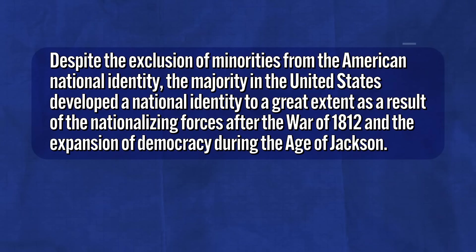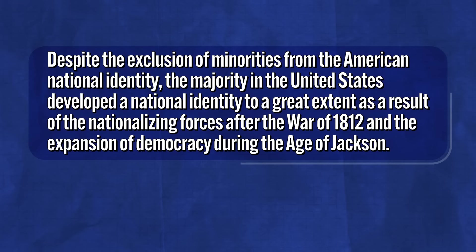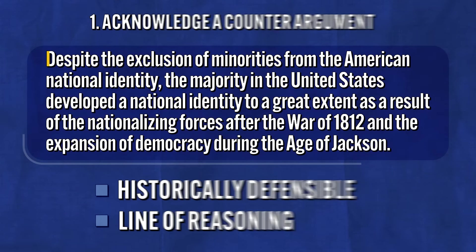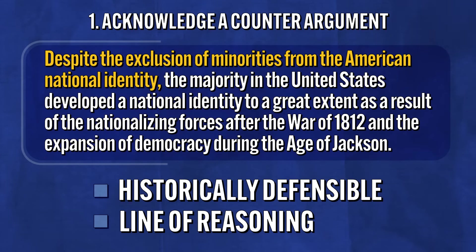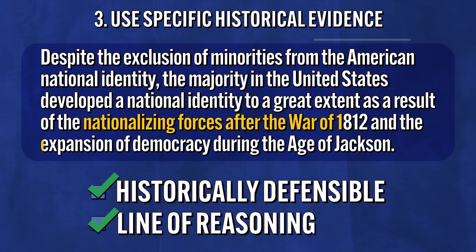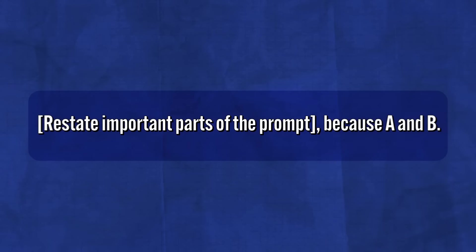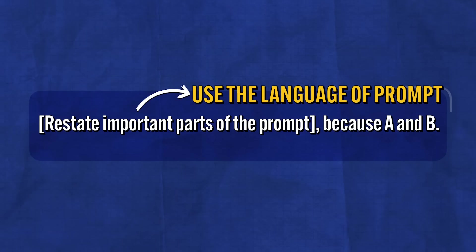Watch what happens when we establish a line of reasoning: 'Despite the exclusion of minorities from the American national identity, the majority in the United States did develop a national identity to a great extent as a result of the nationalizing forces after the War of 1812 and the expansion of democracy during the Age of Jackson.' Notice three things: I acknowledge a counterargument, I use the language of the prompt, and I establish a line of reasoning with specific historical evidence. If you want a formula: restate the important parts of the prompt, 'because A and B,' where A and B are your specific historical evidence.